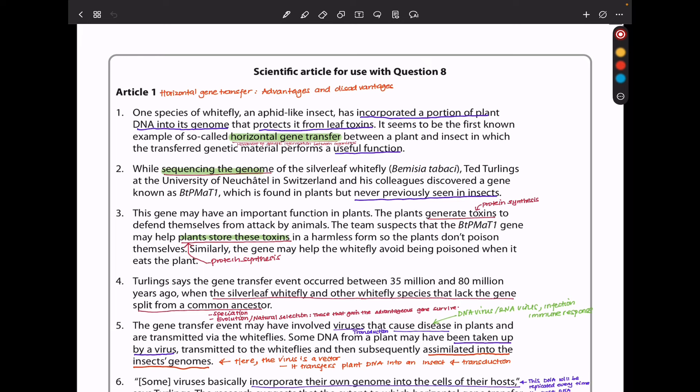While sequencing the genome of the silver leaf whitefly, Ted Turlings at the University of Neuchâtel in Switzerland and his colleagues discovered a gene known as BtPMaT1, which is found in plants but never previously seen in insects.